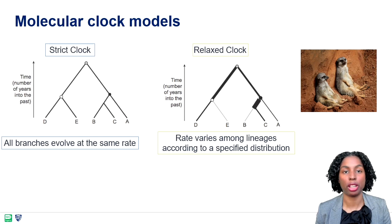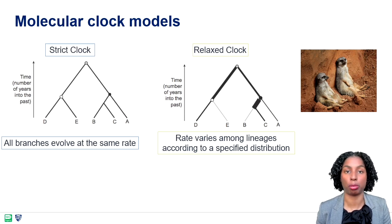We measure evolutionary rates using molecular clock models, which are subdivided into two main models. The strict molecular clock, which assumes that all branches in the phylogenetic tree accumulate mutations at the same rate. And the relaxed molecular clock, which assumes that the accumulation of mutations along branches of the phylogenetic tree varies in time. Thus, allowing the evolutionary rate to change per branch, which is often a more realistic approach.